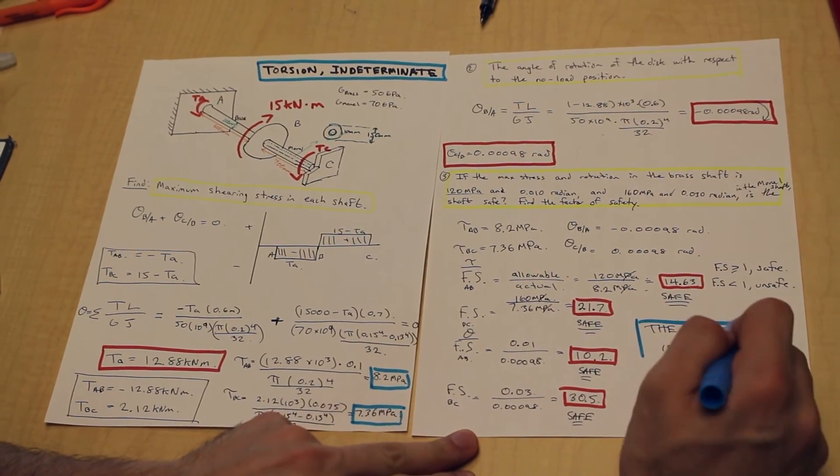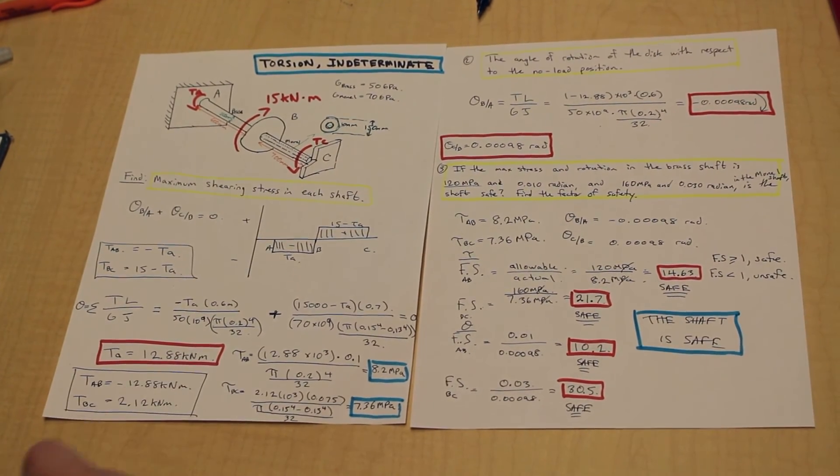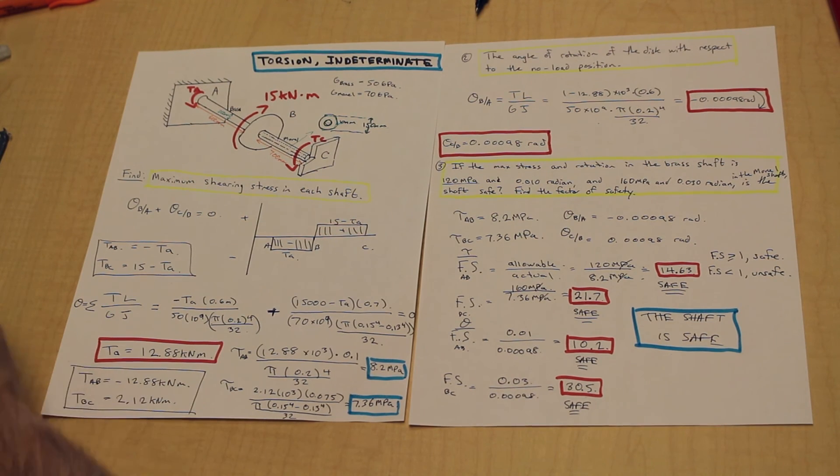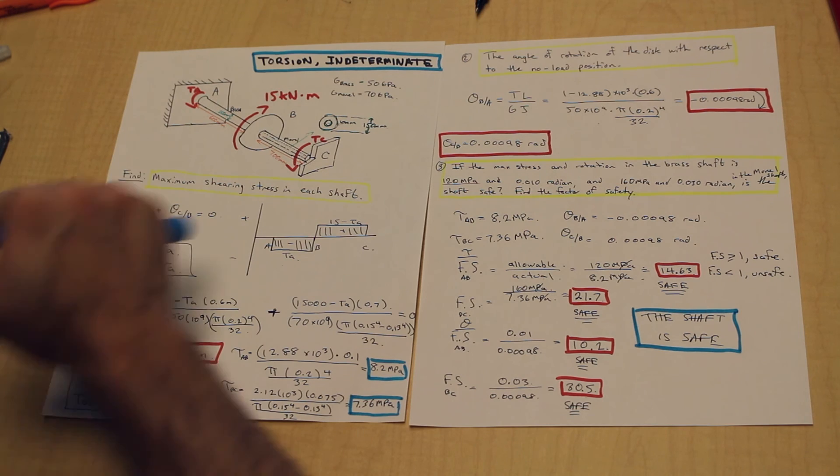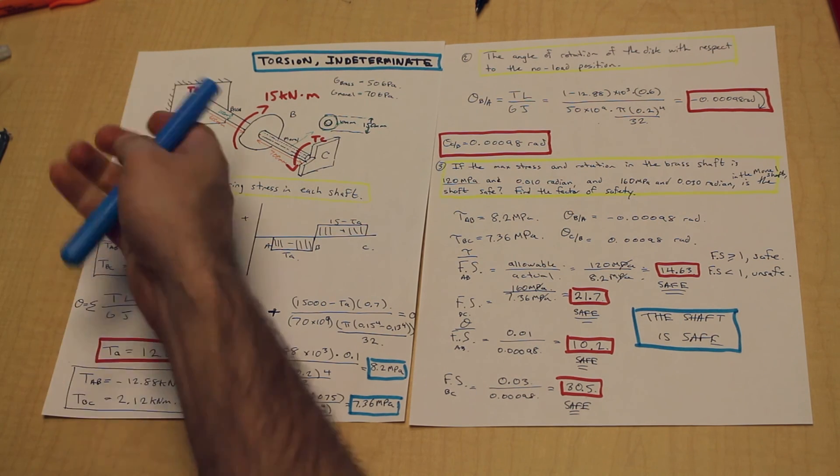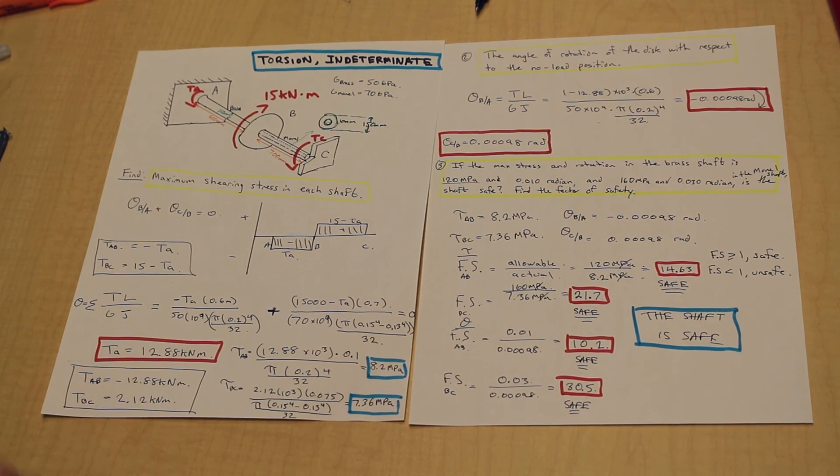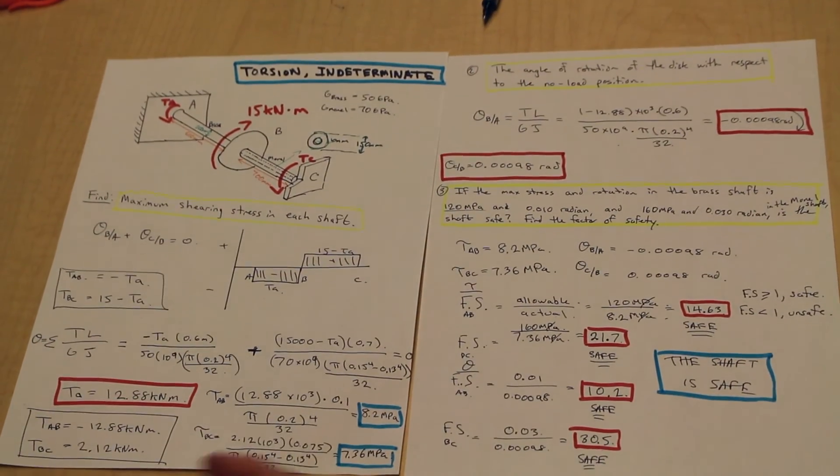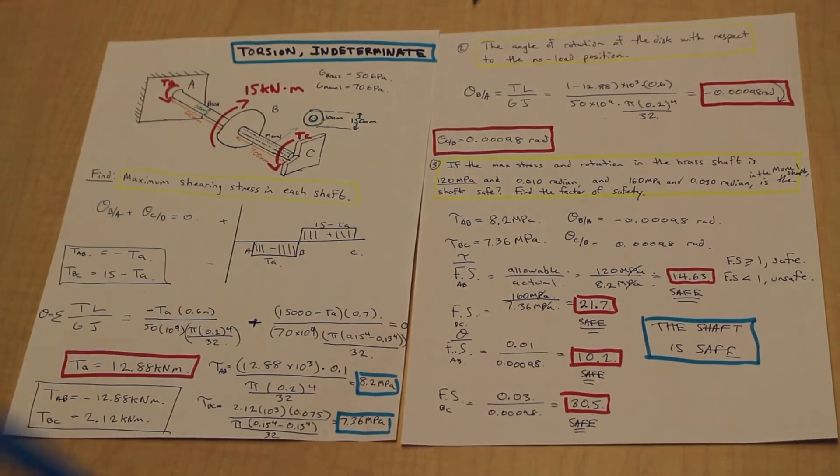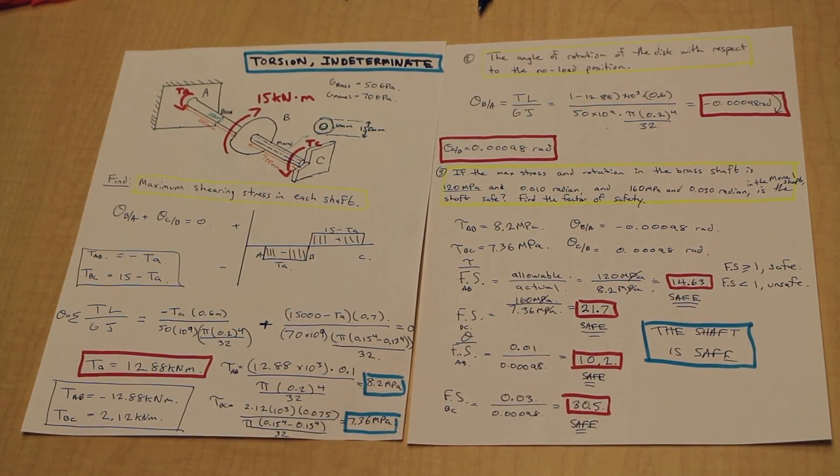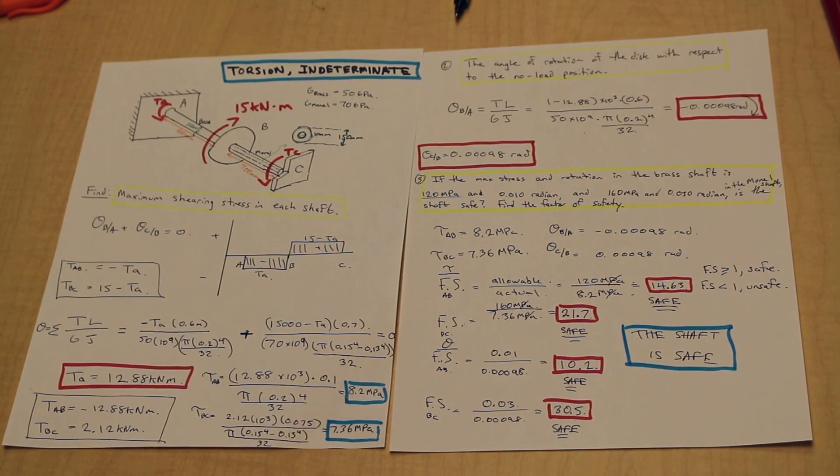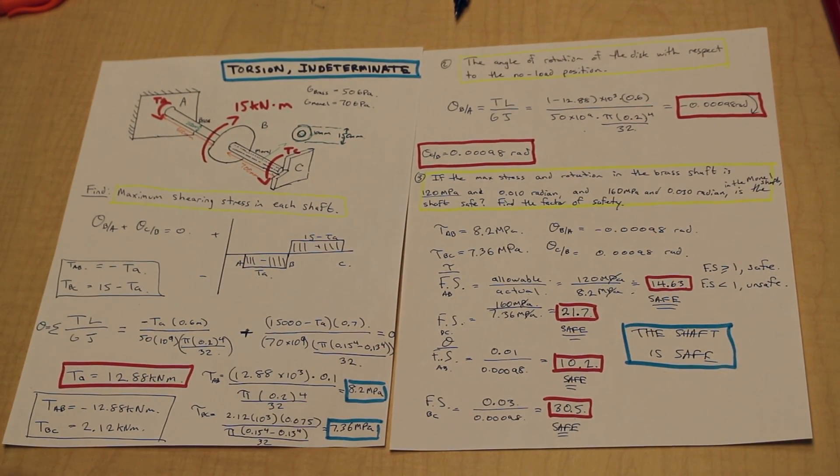That concludes our section on this particular kind of indeterminate problem. Wrapping up what we learned, we went over maximum shearing stress in each of the shafts, the angle of rotation in each of the shafts, and we determined whether or not the shaft was safe. This is a perfect exam problem. You should really study a lot of problems like this. Try and go over this problem, solve it while pausing, make sure you get it 100%. Understand the concepts and the tricks involved that I have explained here, and you should be fine for your exam. Thanks for watching, and we'll go into some more indeterminate problems in other videos. Feel free to like and subscribe if you enjoyed the video.